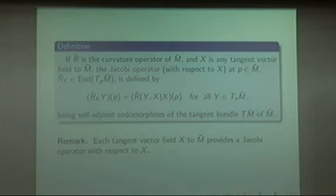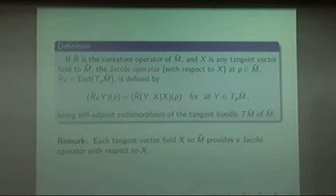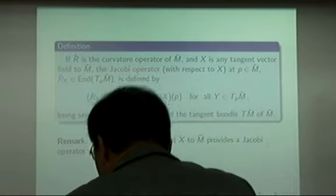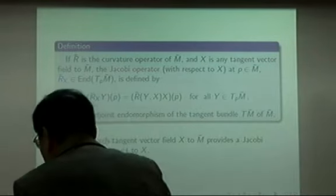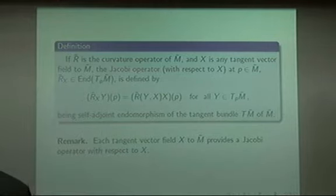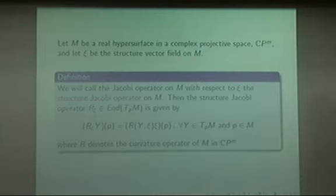Let R̃ be the curvature operator of M̃ and X be any tangent vector field to M̃. Then the self-adjoint endomorphism of the tangent bundle satisfying this condition, we call the Jacobi operator. Clearly, from this definition, each tangent vector field X to M̃ provides a Jacobi operator with respect to any tangent vector X. Thus, we can consider the Jacobi operator with respect to a special tangent vector field.